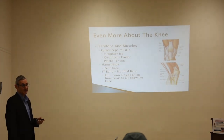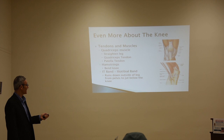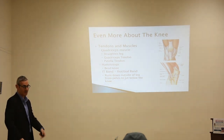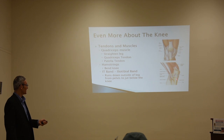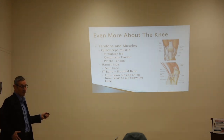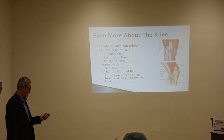Moving on to the muscles and tendons: the quadriceps muscle is the muscle in front of your thigh. It attaches to the quadriceps tendon, which attaches to the patella — the kneecap — and then to the patellar tendon. The function of that is to keep your leg straight when you're standing. The hamstrings are the muscles behind the knee — they bend the knee. There's also the iliotibial band, a tendon running from the top of the pelvis all the way down, which is an important contributor to many knee issues.